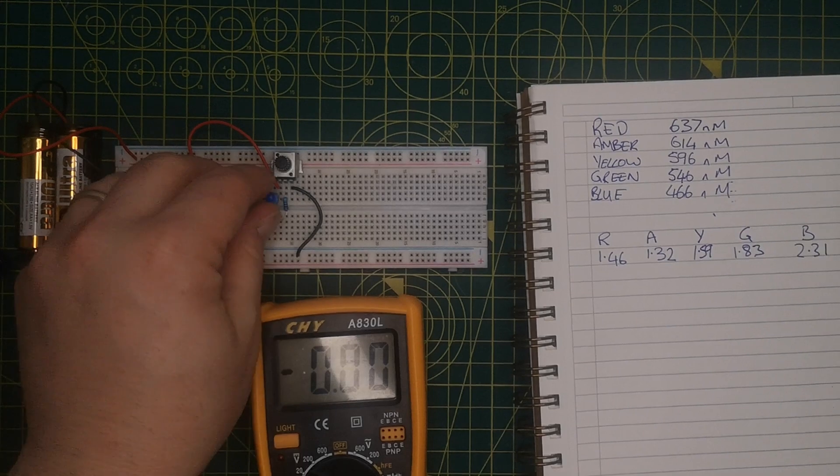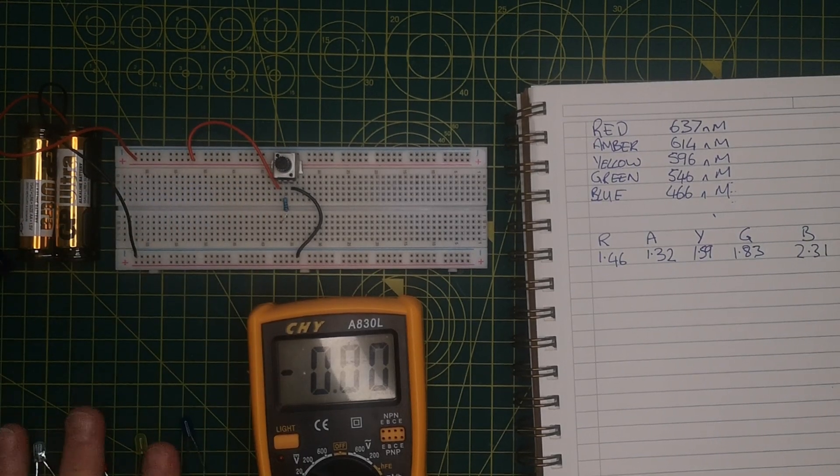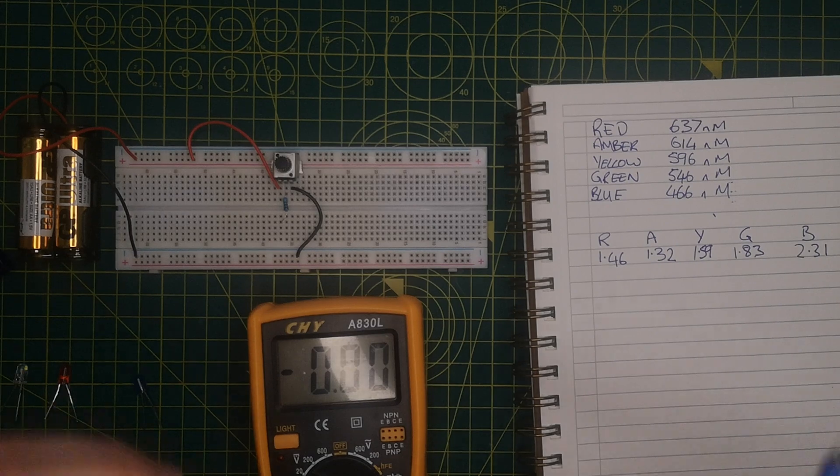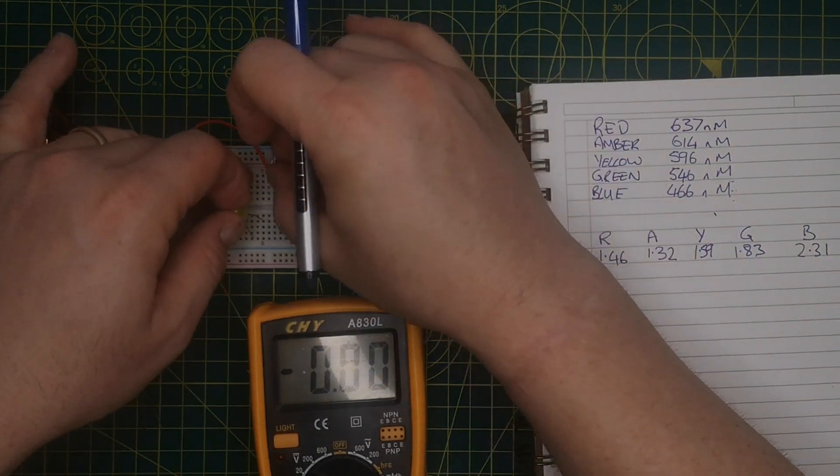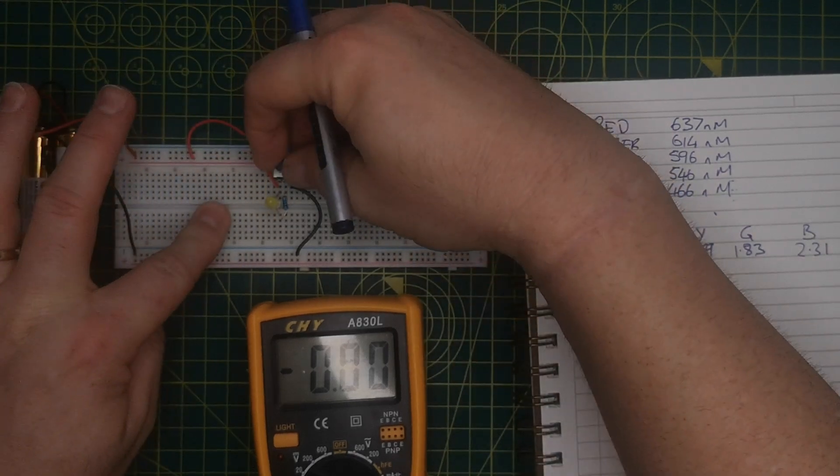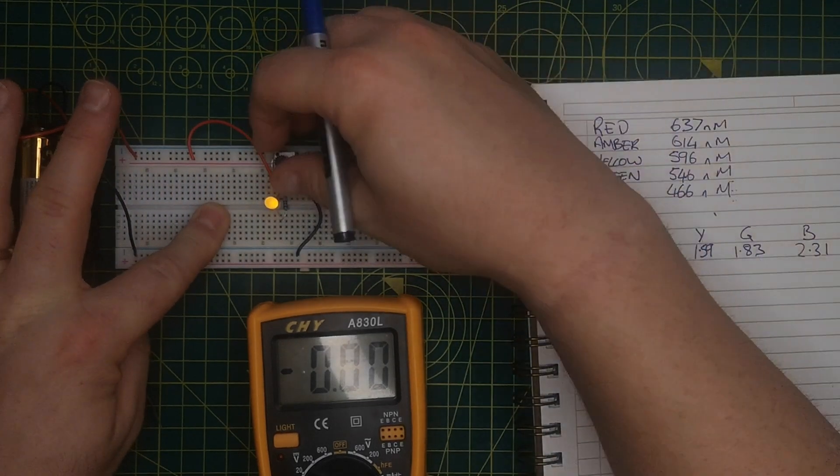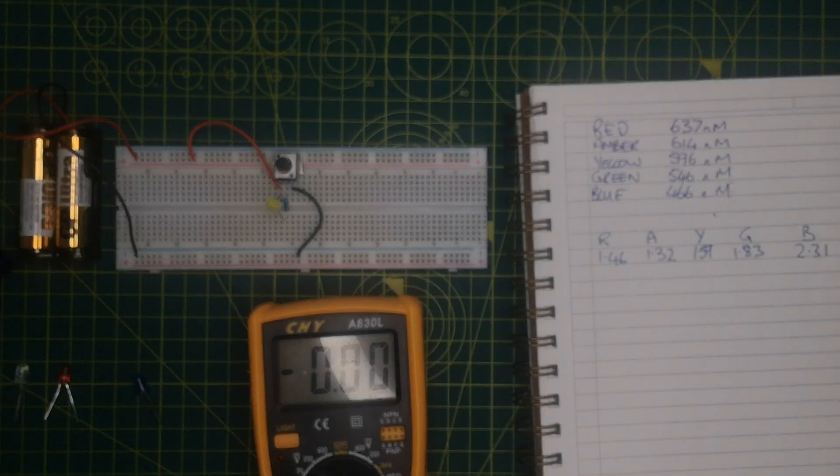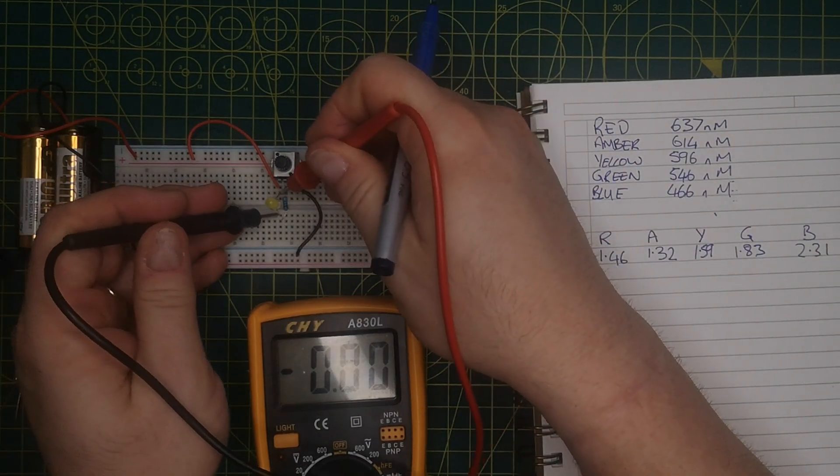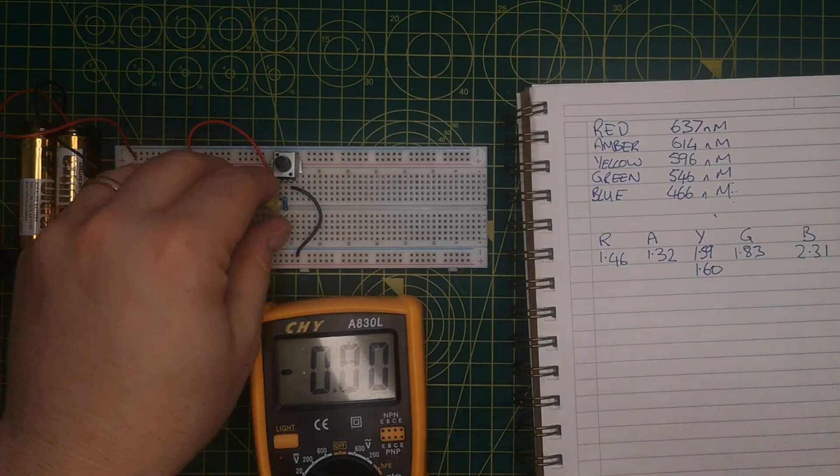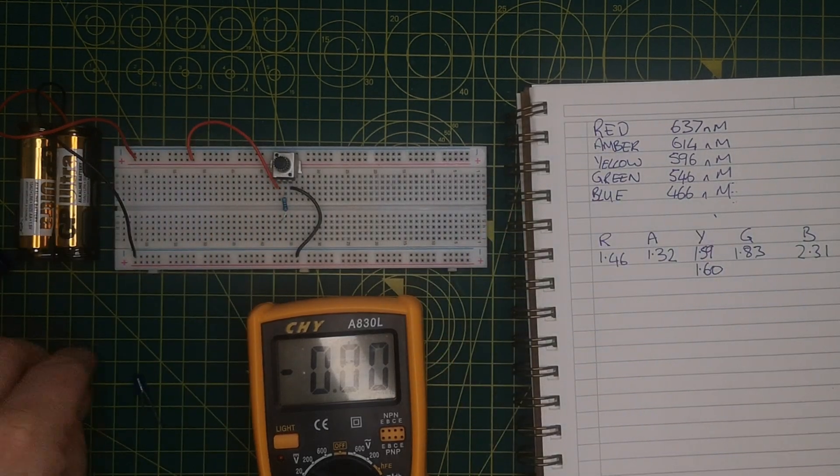So we've done everything once. So I'm going to take them out, and I'm going to do them again. Just so that there's no systematic errors going on here with which the order these have been done in. I'm going to select them in a different order now. So I'm going to put the yellow one in. Turn it down. Pop the yellow one in. LED is lit. Reduce it down until the LED goes out. And I'm going to measure the voltage across it. 1.6.